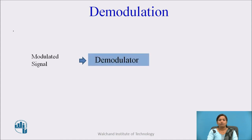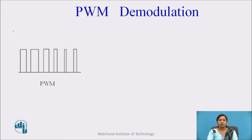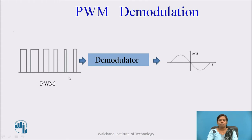The input to the demodulator is a modulated signal, and the output is the original information or modulating signal. In the PWM demodulation technique, the PWM signal is given as input to the demodulator and its output is the original modulating signal. In the PWM signal, the width is variable while amplitude and position of the pulse are constant, so information is contained in terms of change in width.